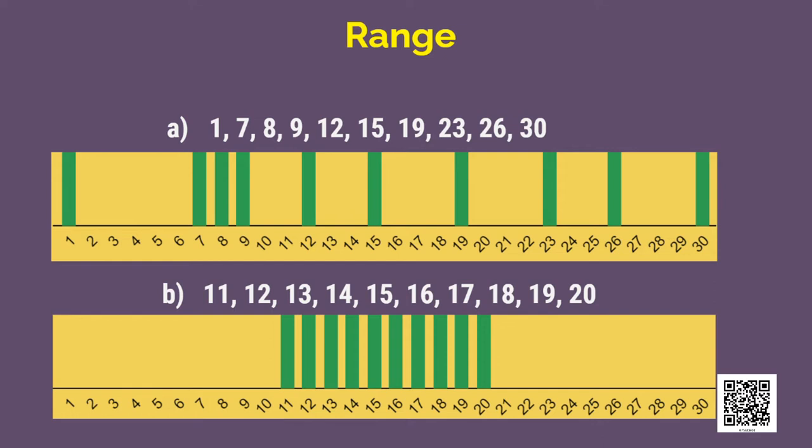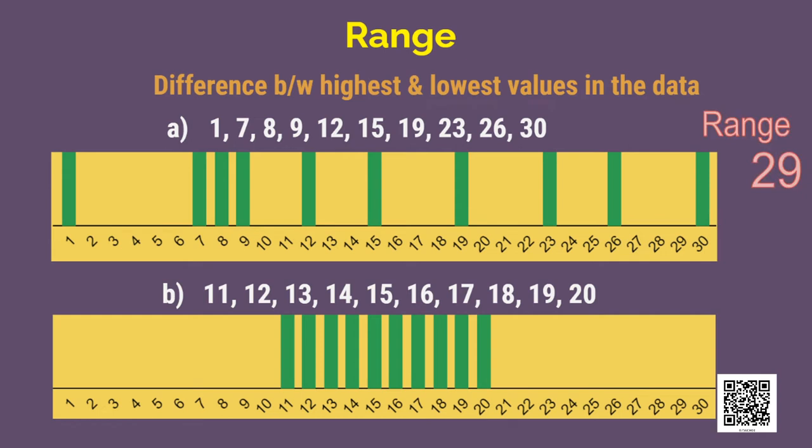The range is the difference between the highest and lowest values in the group of data. Range of group A is 30 minus 1. Similarly, range of group B is 20 minus 11. This range gives an idea of how spread out or how close the numbers are in a group of data.